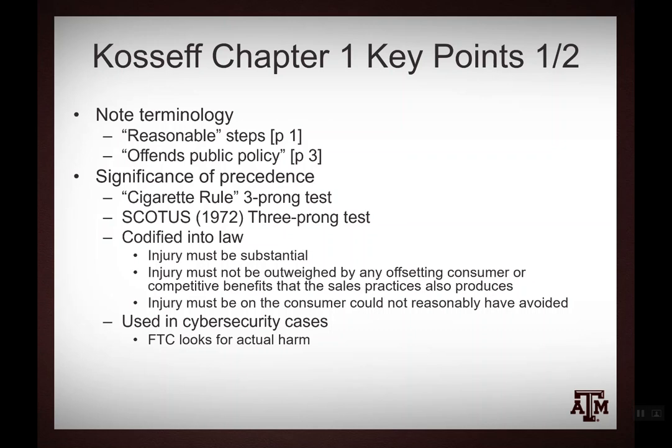To be clear, the unfairness prong of FTC Act Section 5 can be used in data breaches. The injury must be substantial, must not be outweighed by any offsetting consumer or competitive benefits, and it must be one that consumers could not have reasonably avoided.